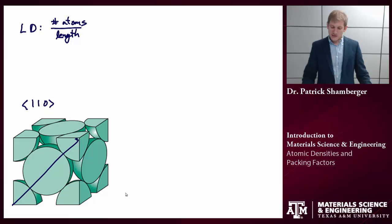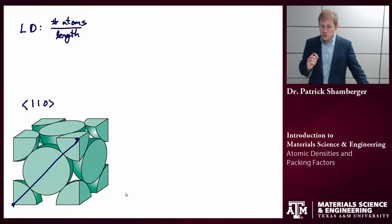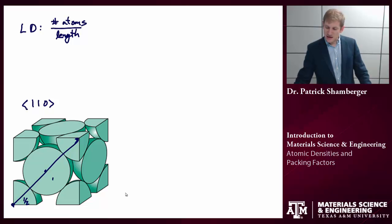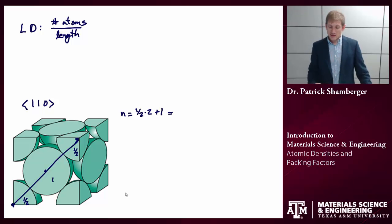One example would be this particular direction. I first need to know how many atoms this direction passes through. This is a little tricky because I start in one atom, pass through a second, and get to a third, but I need to take into account how much of each of those atoms I pass through. Since I'm starting exactly in the middle, I'm only going through half of this atom, all of this atom, and then half of this atom. So in this case, n equals one-half times 2 plus 1, equals 2 atoms.